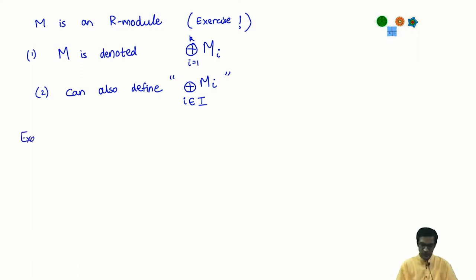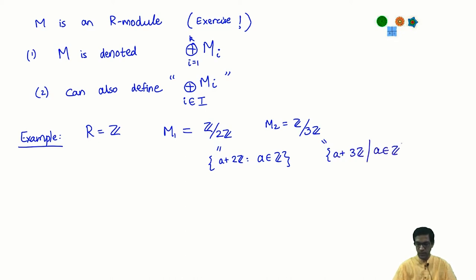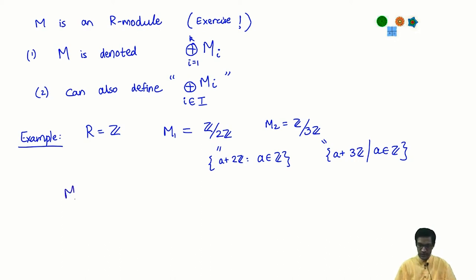Let us do an example of a direct sum. The easiest example is to take abelian groups. If I take my ring to be the integers, any abelian group is automatically a Z-module. Take the cyclic group of order 2 and the cyclic group of order 3. These consist of cosets: Z/2Z has the odd and even cosets, and Z/3Z has cosets congruent to 0, 1, and 2 modulo 3. Both are R-modules, so what does the direct sum mean? It is M1 ⊕ M2, which is M1 × M2 with component-wise addition and scalar multiplication.